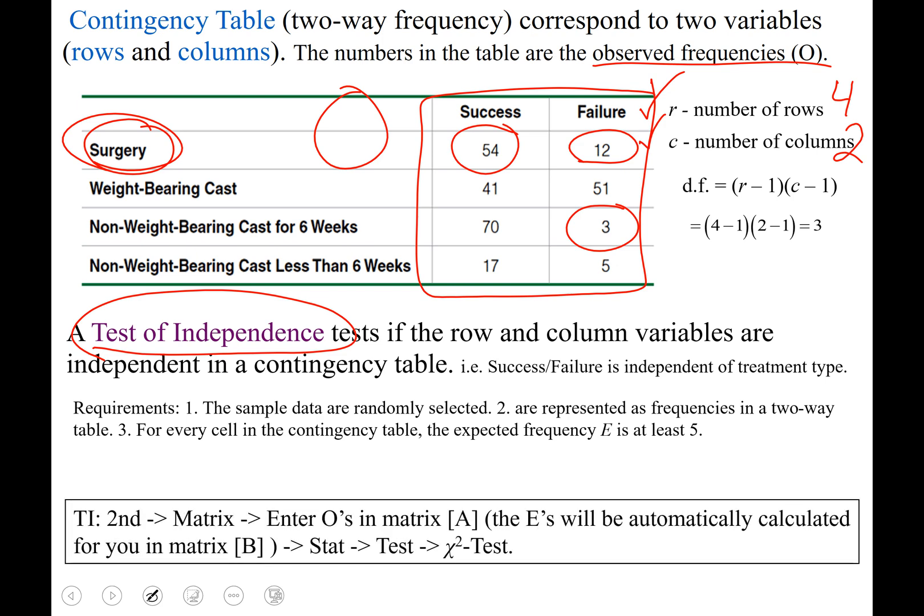So to type a two-way table into your calculator, you can't use list one and list two. Instead you're going to have to enter it into a matrix. So I'll walk you through the example coming up, but it's basically a second matrix, and then you'll enter what you see in the table into matrix A.